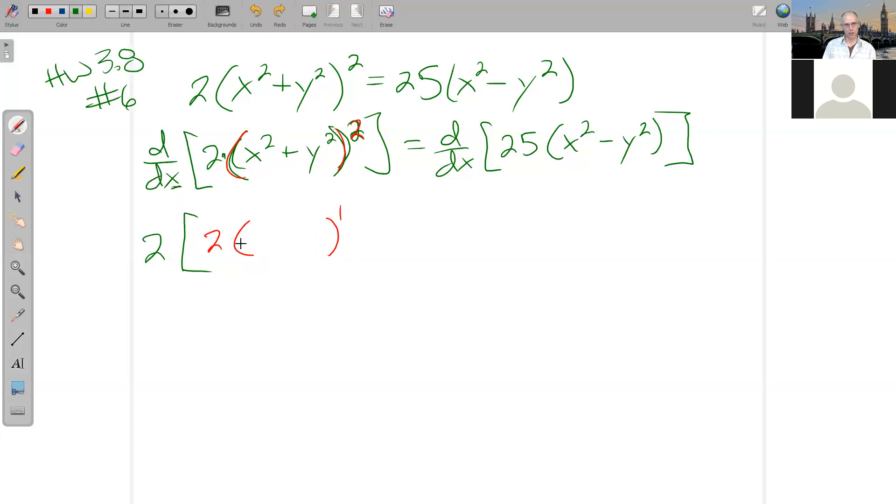Chain rule says leave the inner function alone and then multiply by its derivative. So this is the 2x plus 2y times y prime. That's better.